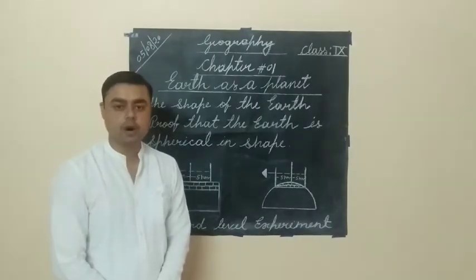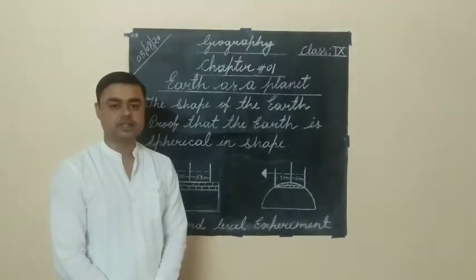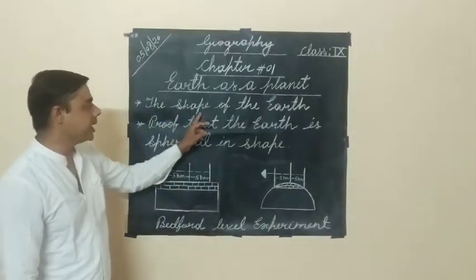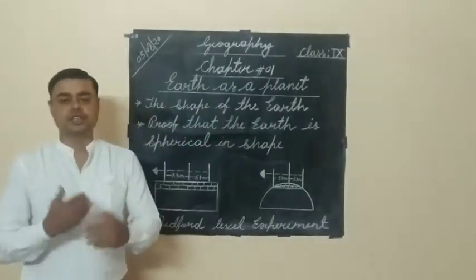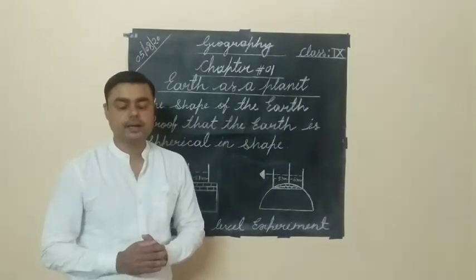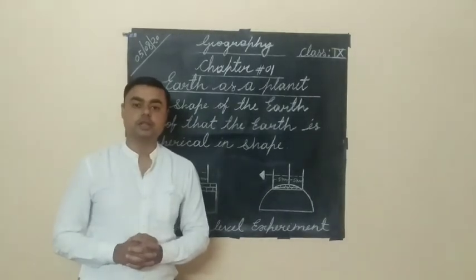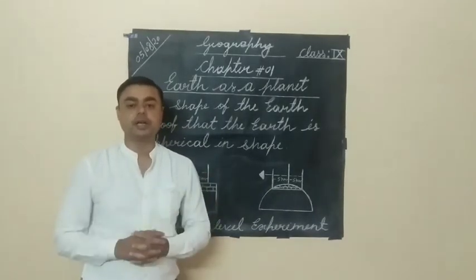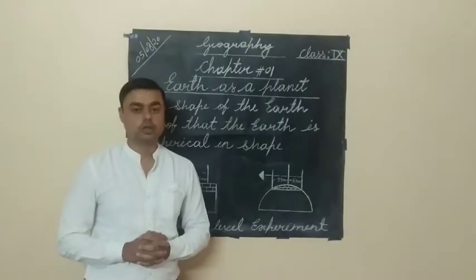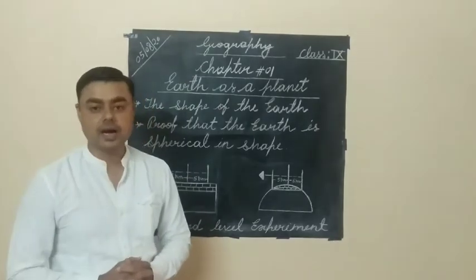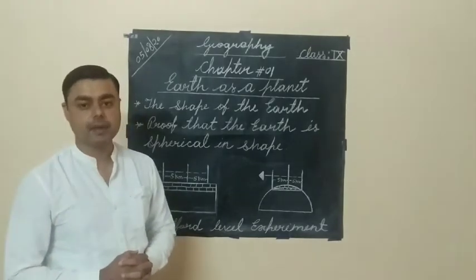We are going to start the first topic of this chapter: the shape of the Earth. Before starting, let me introduce this chapter. Our Earth is also known as a watery planet, because 70% of the area of the Earth is covered by water. For the same reason, our Earth is also known as the blue planet.